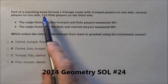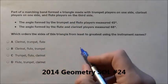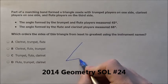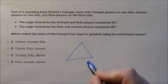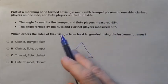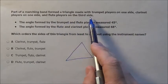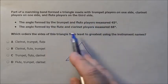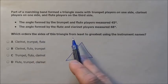Here's problem 24. It says part of a marching band formed a triangle. So we have this triangle that's formed, made of trumpet players on one side, clarinet players on one side, and flute players on the other. Then it gives us the angle between them and it says put these in order.